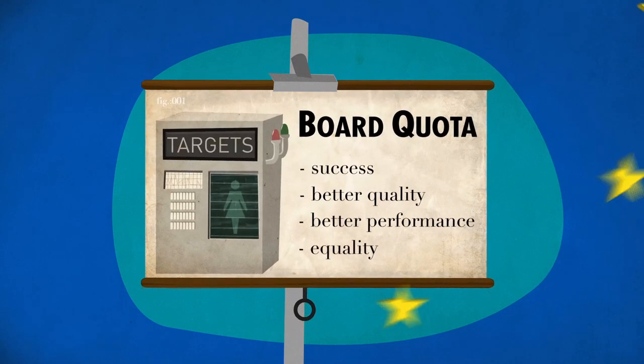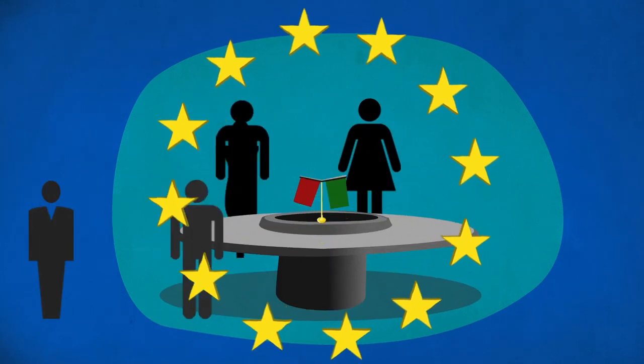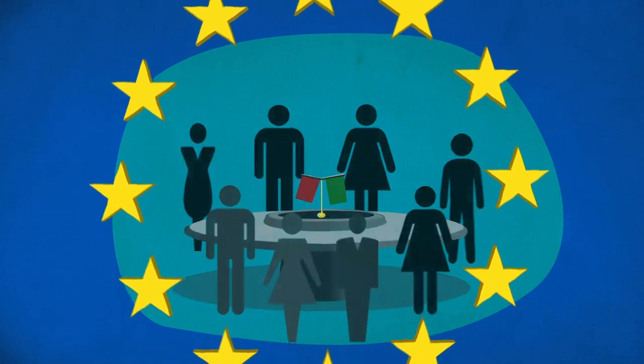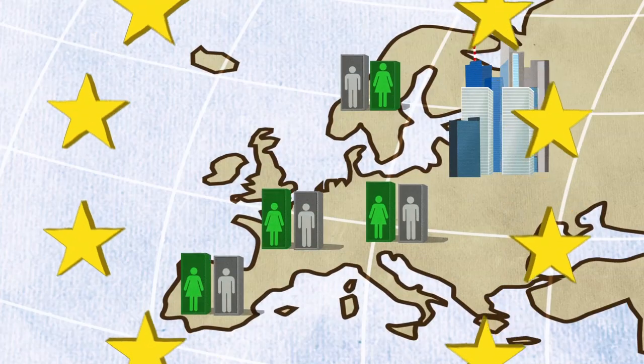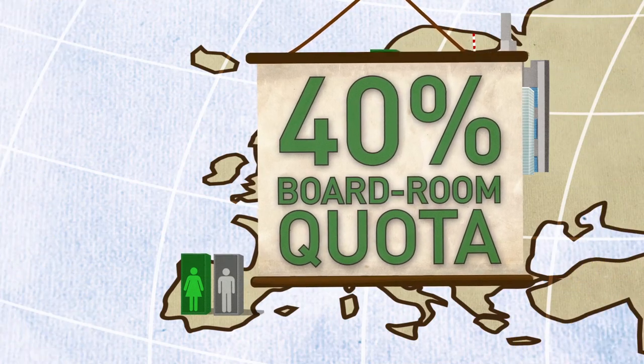Binding targets can help give the first push. The European Union needs legislation to ensure a minimum female representation on the boards of larger companies. Proposals to introduce a binding 40% boardroom quota would be a step in the right direction.